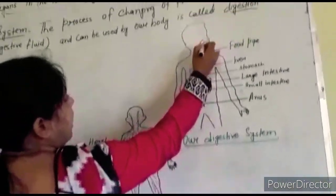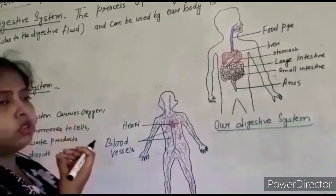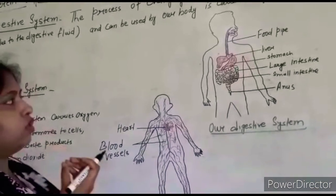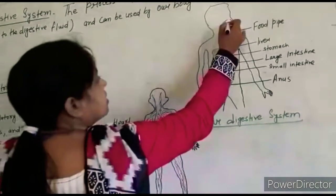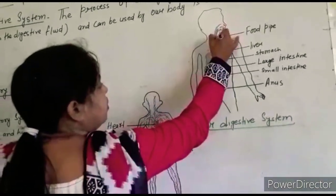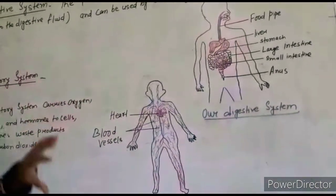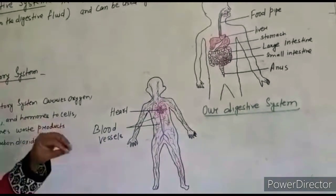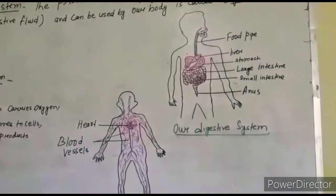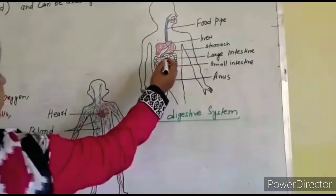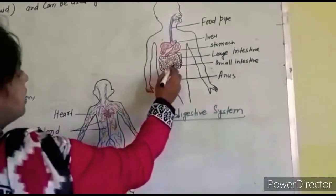When we eat food, in our mouth we have saliva, which is a digestive juice. When saliva mixes with the food it turns the food into small, soft pieces. Through the food pipe it then comes into the stomach. In the stomach, digestive juices are also present, which again break the food into smaller pieces, and after that it is transferred to the small intestine.